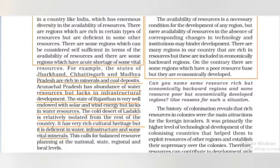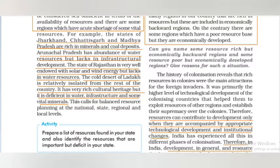For example, Jharkhand, Chhattisgarh, and Madhya Pradesh are rich in coal deposits, while Arunachal Pradesh has greater water resources but lacks infrastructure development. Rajasthan has solar energy and wind energy but lacks water resources. The cold desert of Ladakh is relatively isolated, with rich cultural heritage but deficient in water, infrastructure, and some vital resources. This calls for balanced resource planning at national, state, regional, and local levels.